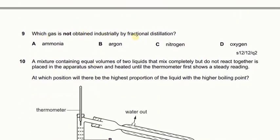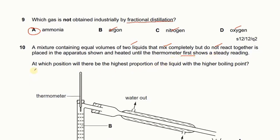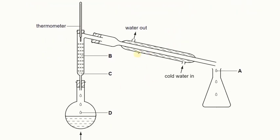Which gas is not obtained industrially by fractional distillation? Fractional distillation is used to obtain different gases from air — oxygen, nitrogen, and argon. Ammonia is not prepared by fractional distillation. In the next question, a mixture of two liquids that mix completely but do not react are heated and the first steady thermometer reading is shown. The liquid with the higher boiling point will be present in the lowest position — at D — while A will have the liquid with the lowest boiling point.